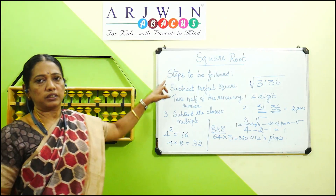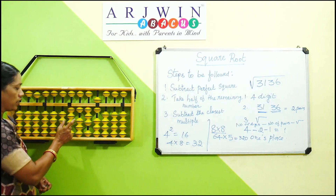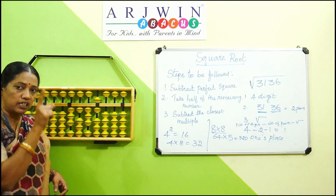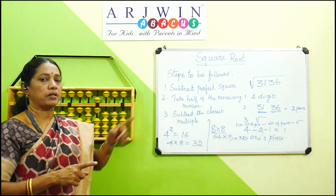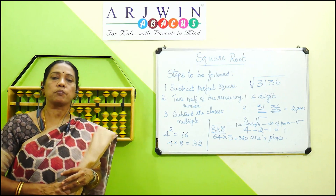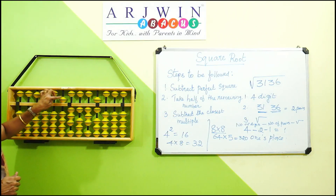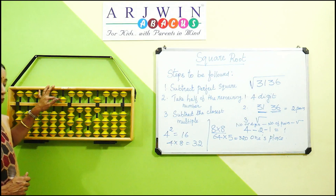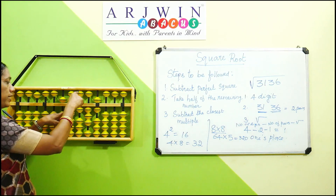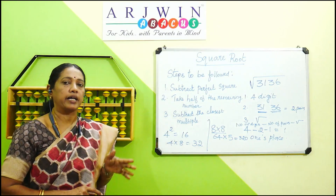Now follow the steps. First step: subtract the perfect square. Take the first pair, which is 31. From 31, subtract the nearest perfect square. The nearest perfect square is 25, which is 5 squared. So 5 is the answer digit — keep 5 in the tens place. Now subtract 25: minus 20, then minus 5 using the formula minus 10 plus 5. First step is complete.